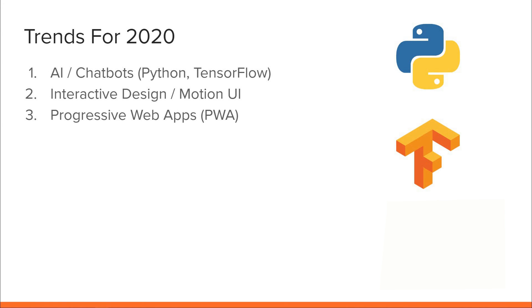The next trend would be progressive web apps. Progressive web apps are regular web apps that give the user a native app experience. One of the main features is the ability to work offline by using service workers. This allows the user to use an app that is not actually installed on their phone — it's not taking up any space, but it looks and feels like an app. The next trend is responsive web design. Most people use their mobile devices to browse the internet, so websites have to be responsive. Design for the mobile experience first, then scale up to tablet and desktop. Your website will even rank higher on Google if it's responsive.